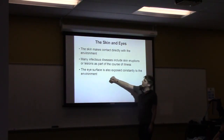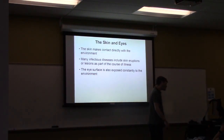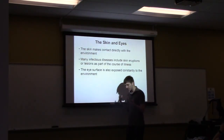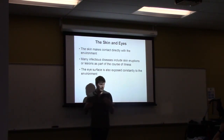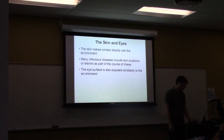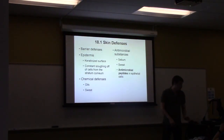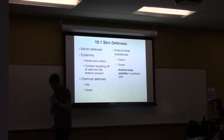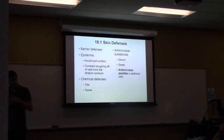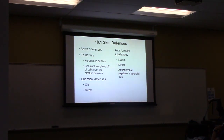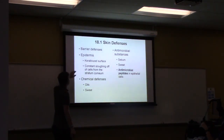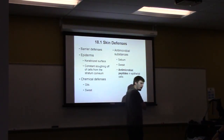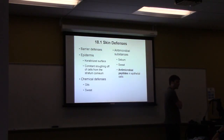The eye is also exposed to the environment but is more sensitive, so it has other protective mechanisms — primarily producing tears and constantly blinking to wash things away. As far as defenses go, the biggest one for the skin is the barrier defense: literally blocking organisms from gaining entry. This is primarily the keratinized epidermis, which is rough and hardy and difficult for organisms to penetrate.